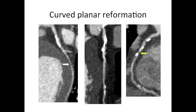Coronary arteries can be displayed in lots of different ways. We can look at them on axial imaging, or we can do curved planar reformations. These involve drawing a centre line down the middle of the vessel, either automatically or manually, and then displaying the coronary artery in curved or straightened-out form. This is very useful for assessing the degree of coronary artery stenosis.